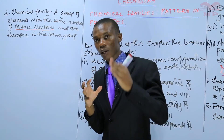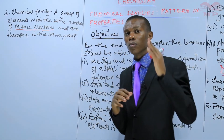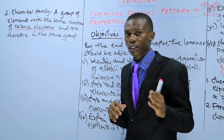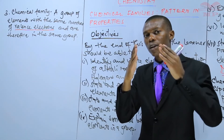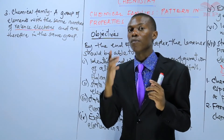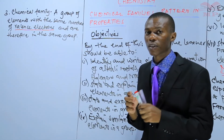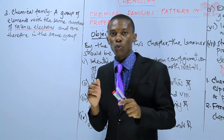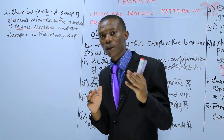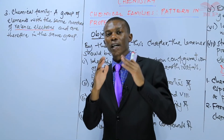For example, when elements have one electron in the outermost energy level, those elements are found in group one. We have the example of lithium, sodium, and potassium — all three elements have one electron in the outermost energy level, and therefore they are found in group one. So you can say that lithium, sodium, and potassium form a chemical family.